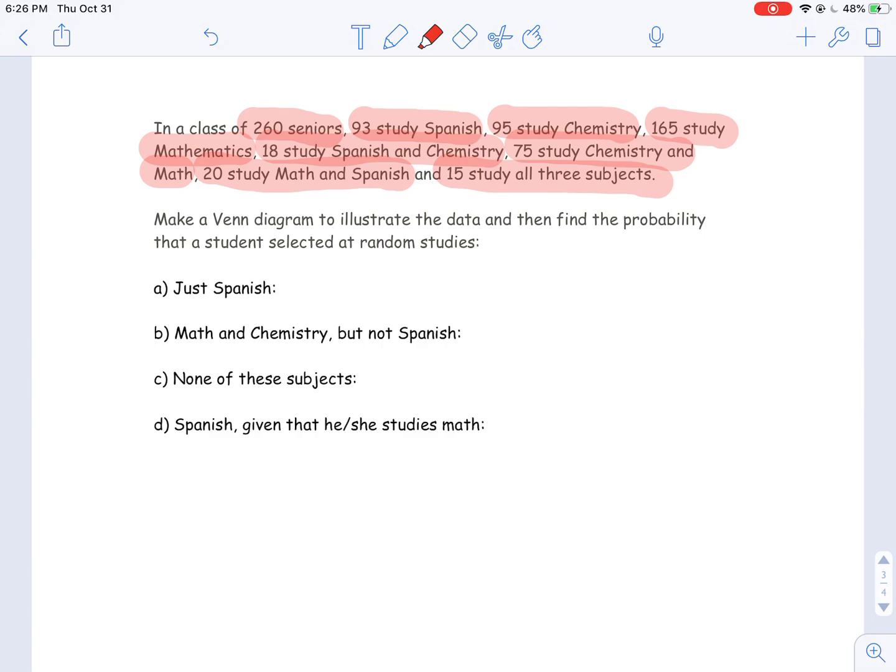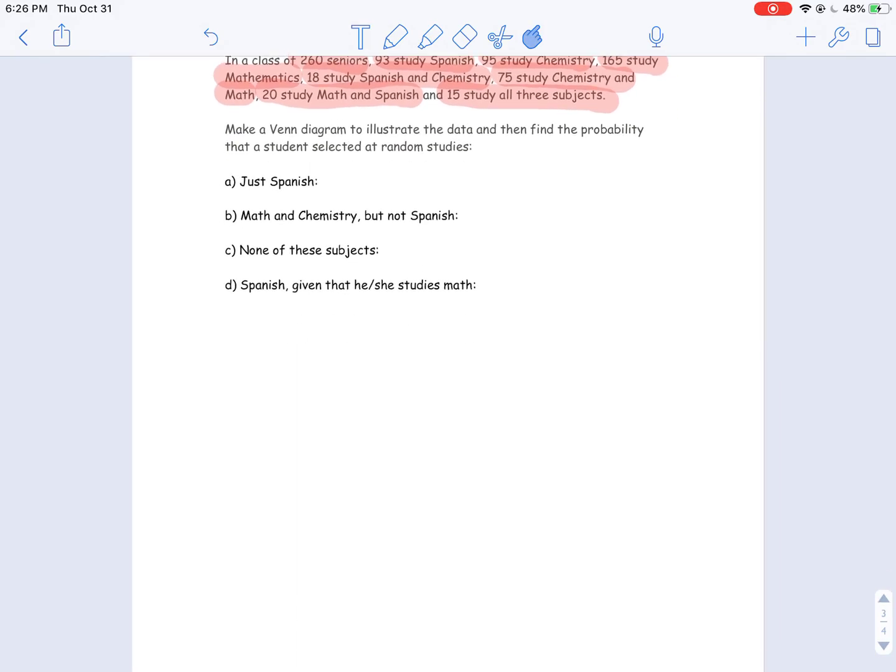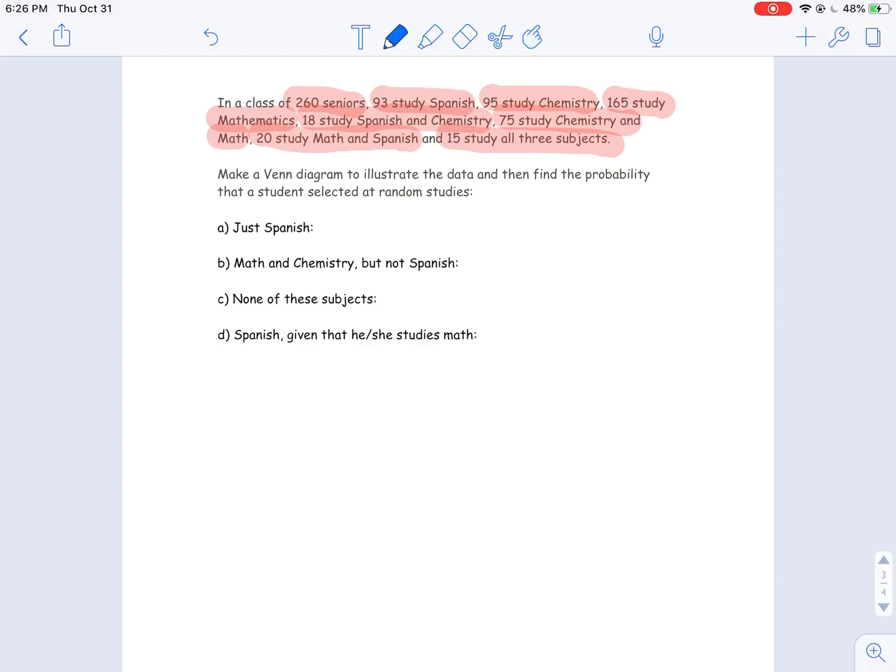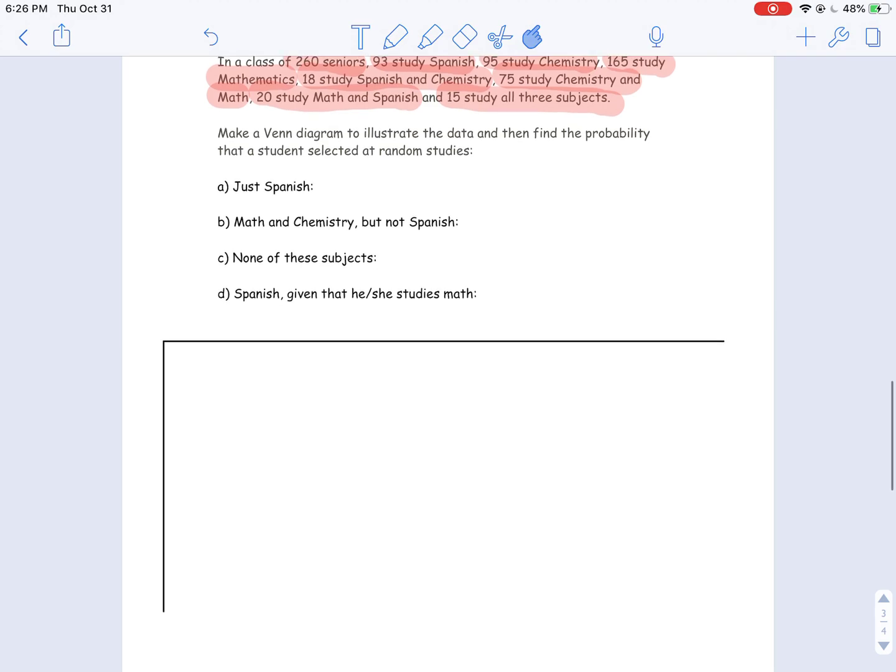We're asked to make a Venn diagram then calculate some probabilities. I'm going to start with my Venn diagram here. Since I have three classes I'm concerned with - Spanish, Chemistry, and Math - I'm going to be making three circles for this. Before I do that I'm going to make a rectangle to represent basically my sample space here. This is going to represent everybody that was involved in this, my whole population that I sampled, all these seniors.